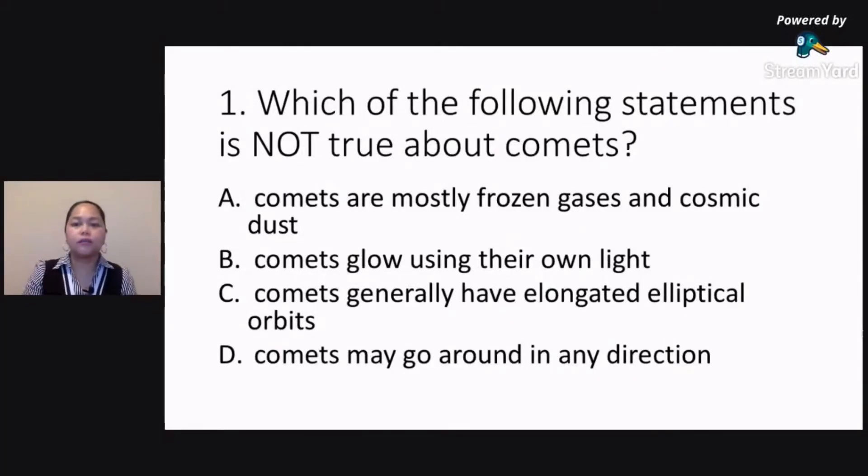Question number one. Which of the following statements is not true about comets? Is it letter A, comets are mostly frozen gases and cosmic dust? Letter B, comets glow using their own light. Letter C, comets generally have elongated elliptical orbits. Or letter D, comets may go around in any direction.